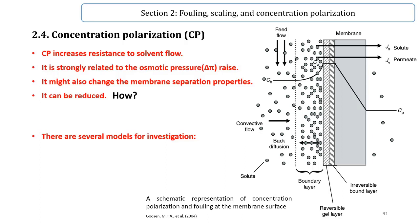Concentration Polarization. The pressure-driven fluid flow through a selective membrane convectively transports solute towards the membrane surface. The partially or totally retained solutes will accumulate in a thin layer adjacent to the membrane surface, generating a concentration gradient — that is to say, the solute concentration near the membrane surface is much higher than that of the bulk feed solution.